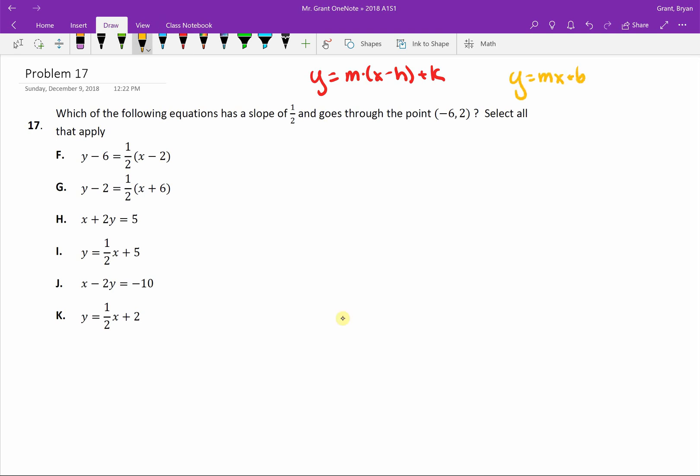But the issue with mx plus b is b you need the y-intercept. And I think if you think about the point negative six comma two, negative one, two, three, four, five, six comma two, that point's not on the y-axis. It's not a y-intercept. And so it becomes a little bit trickier to write an equation when you don't have the y-intercept which is why HK form is so powerful because you can write the equation for any point which is what we have here.